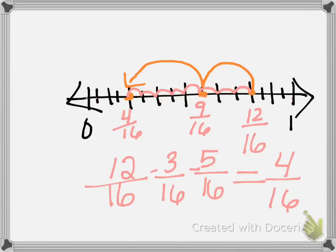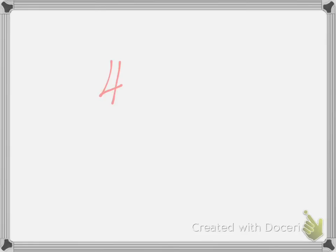So my written equation is twelve sixteenths minus three sixteenths minus five sixteenths equals four sixteenths. Let's just go ahead and try and reduce this because I know that it's being asked. Can four sixteenths be reduced? And the answer is yes.